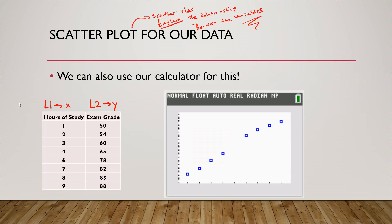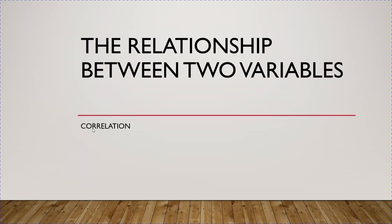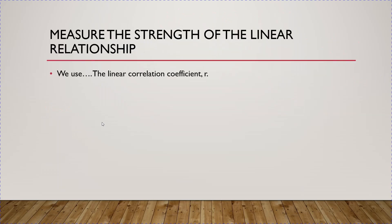Going back, we were looking at the relationship between two variables — the hours of study and the exam score. What we saw was a positive linear relationship, but notice it's not a perfect straight line; it deviates just a little. So what we want to do with correlation is measure the strength of that linear relationship.